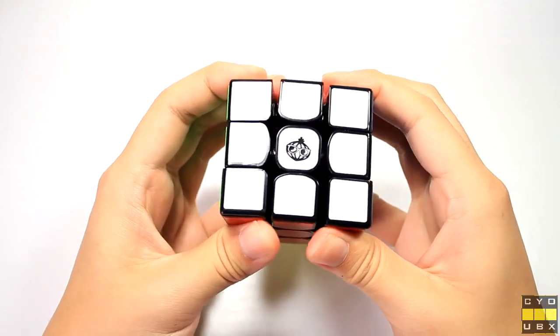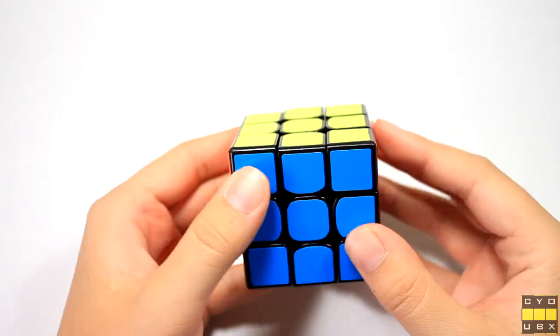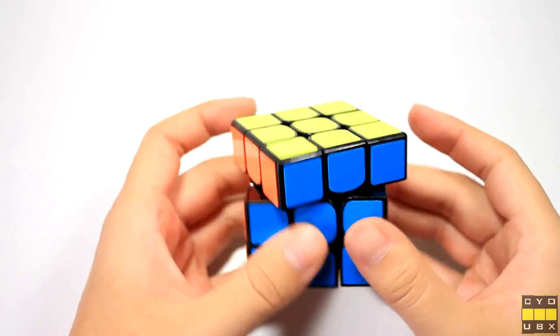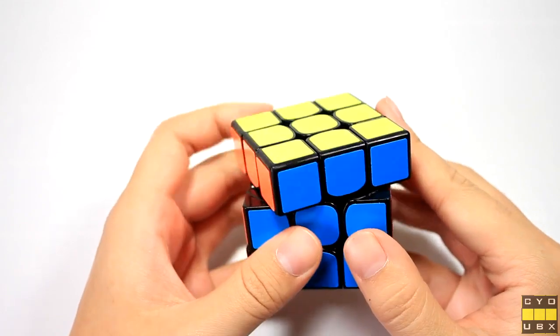The result of this rounding is a cube that can reverse corner cut like no other. Out of the box, on tight tensions, the cube is able to reverse corner cut four fifths of the piece. Regular corner cutting was good as well, effortless at 45 degrees.